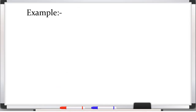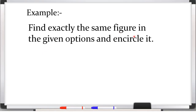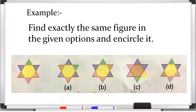Now I am going to show you one example of these type of questions where you find the exactly same figure in the given options and encircle it. You have to find out the same figure and circle it. Here this figure is given — this is the original figure and we have to find out the exactly same figure.